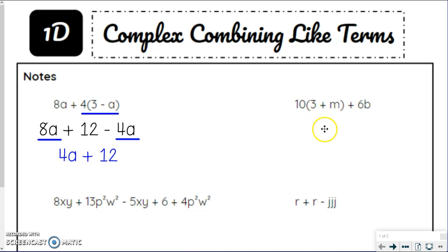So let's look at another one like that. So we need to do distributive first, because I'm noticing that number next to the parentheses and whatnot. So we're focusing our attention here first. So we're going to do our 10 times 3 to get 30, plus 10 times m to get 10m, and then just bring that plus 6b with us. And then when I look at my new expression, I've got 30, I've got 10m, I've got 6b.